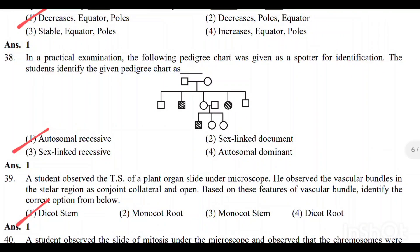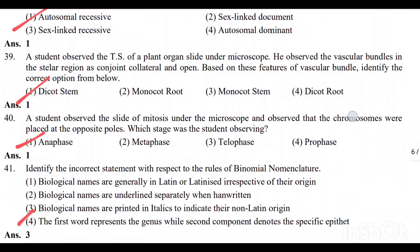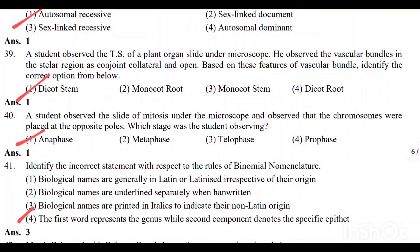Question number 38: Practical examination — the following pedigree chart. The students identify the given pedigree chart as autosomal recessive. Option 1 is the correct answer.